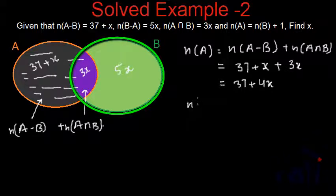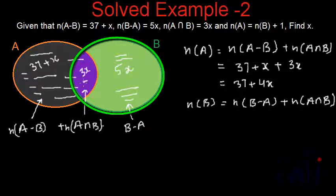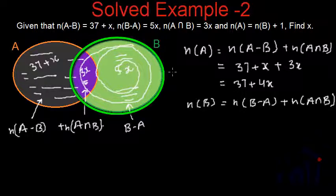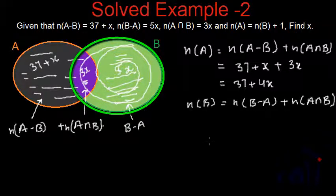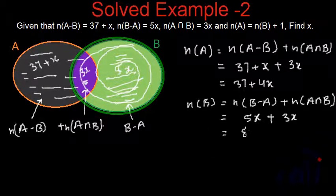Similarly, n of B — the cardinal number of set B — is equal to n of B minus A plus n of A intersection B. The portion representing B minus A plus the intersection area together make up set B. Substituting the values: n of B minus A is 5x and n of A intersection B is 3x, so the cardinal number of B is equal to 8x.